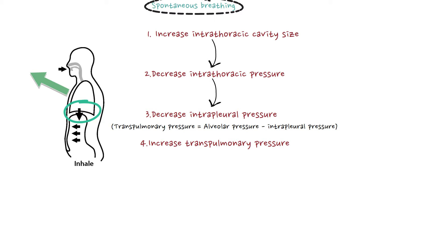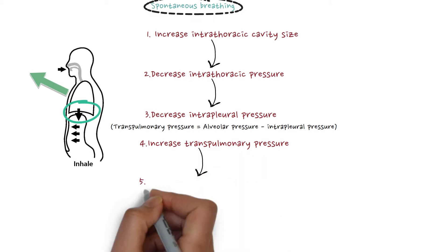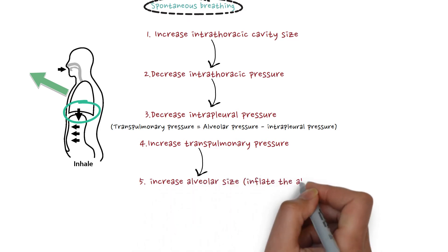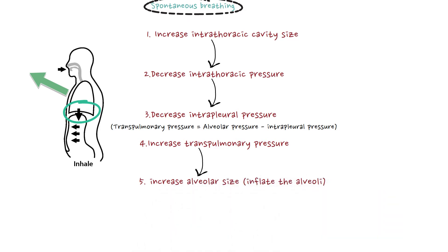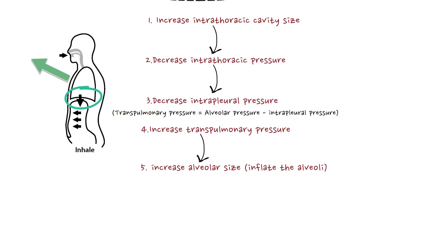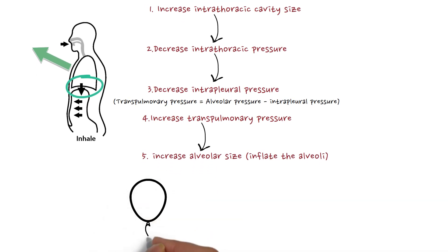Transpulmonary pressure equals alveolar pressure minus intrapleural pressure. When transpulmonary pressure increases, that leads to an increase in alveolar size — inflation of the alveoli. But there is no air movement yet. Let's go back to Boyle's Law: the alveoli now have a larger size with a constant amount of gas.